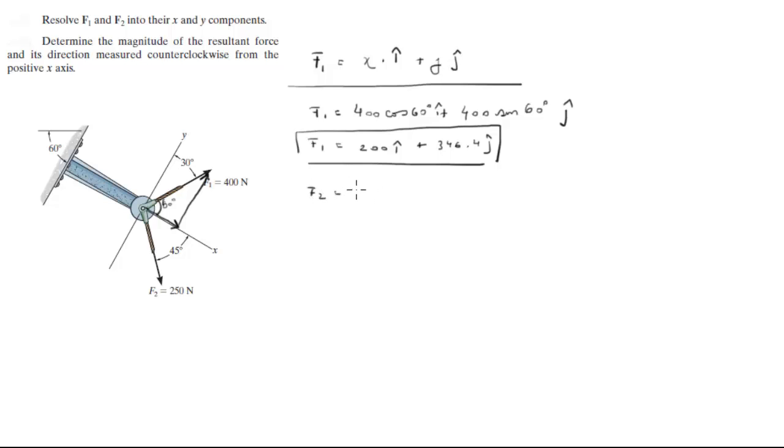The second force is going to be 250 cosine of 45 degrees I. So the second one, this is the X component and this is the Y component. Minus, because it's going on the negative Y direction, 250 sine of 45 degrees.